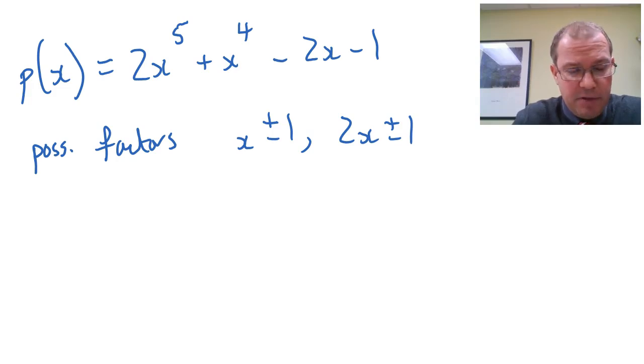We'd have to find the first factor using the factor theorem, then do long division or equating coefficients to get the quotient, and that would give us a degree 4 polynomial. Then we'd have to use the factor theorem on the degree 4 polynomial and go again to get a degree 3 and so on. The question would be a long question.